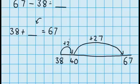So so far we've done a jump of 2 and a jump of 27, which means in total we've done a jump of 29.